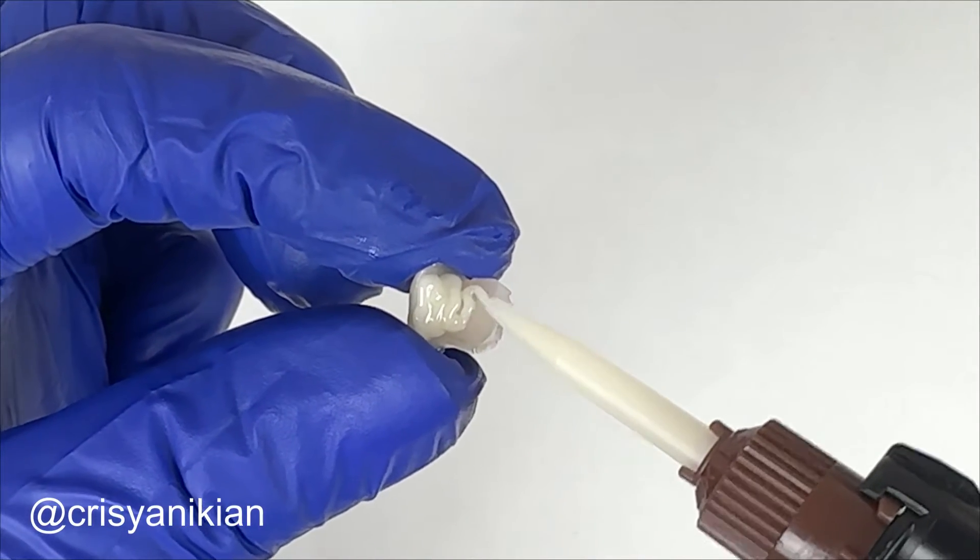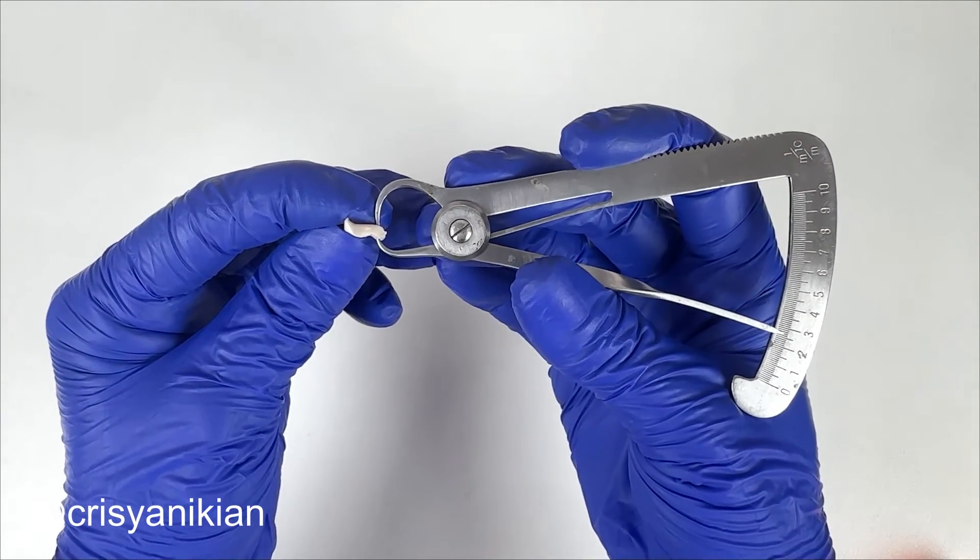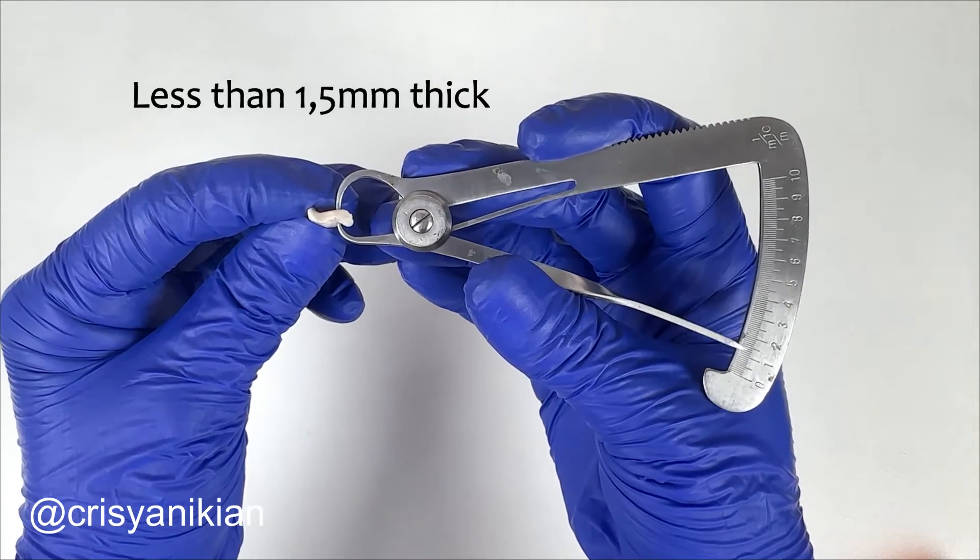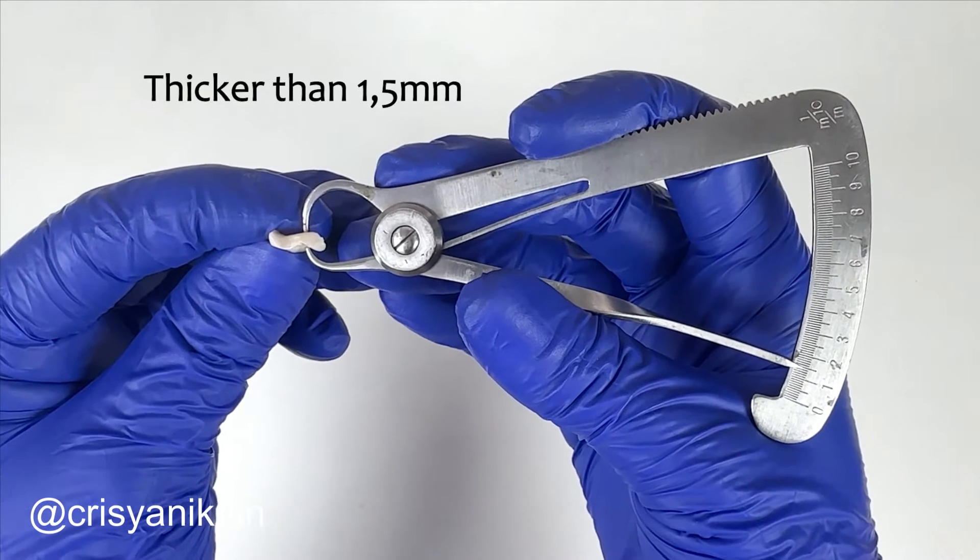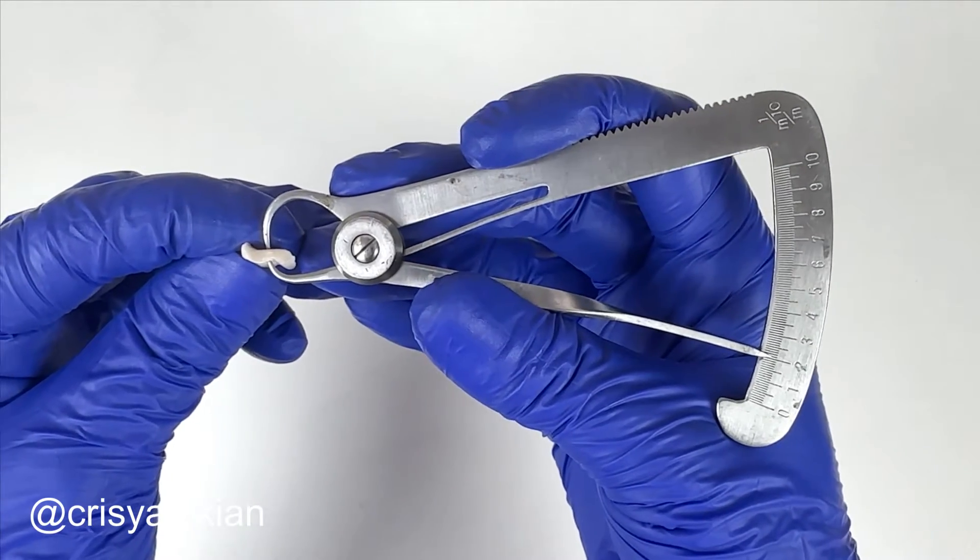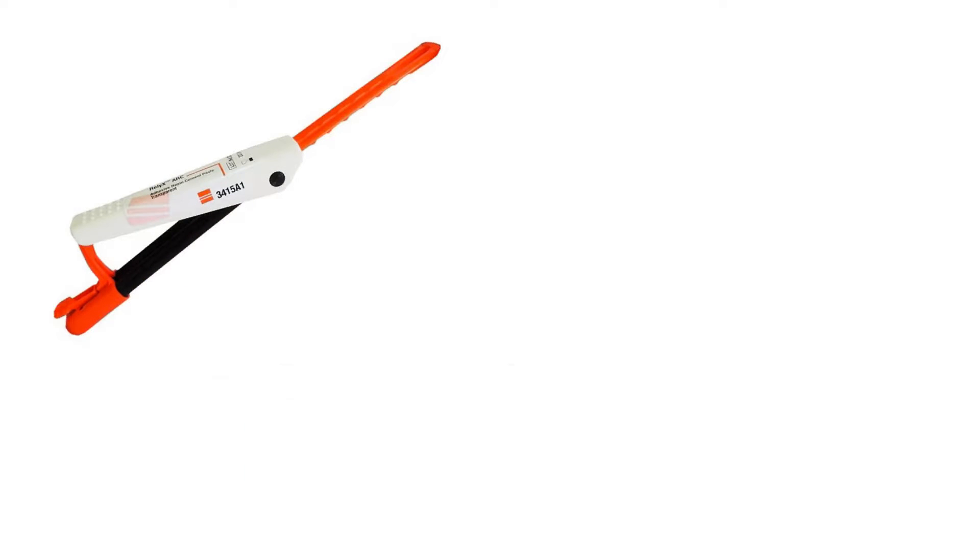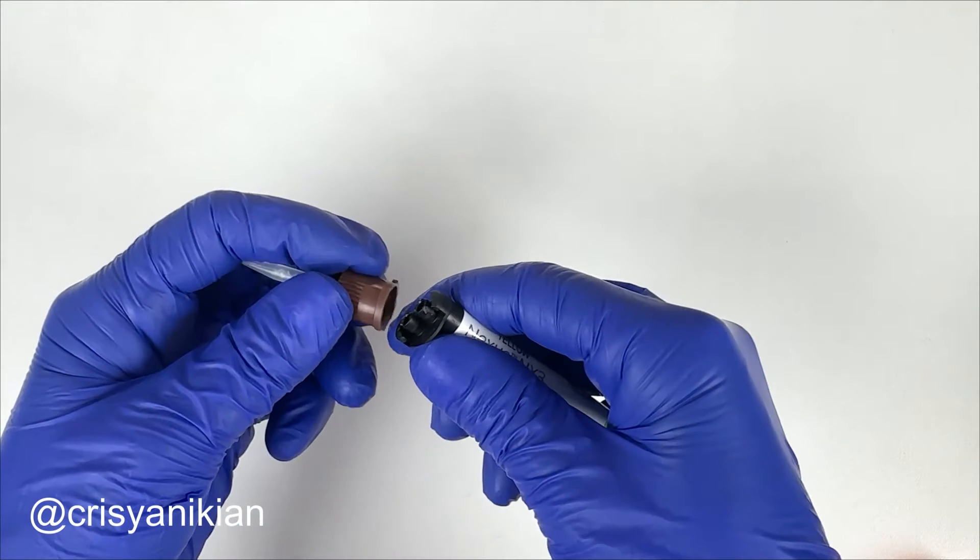Before cementing the onlay, select the resin cement you will use. Take into consideration the thickness of the onlay measured with a thickness gauge. If the onlay is less than 1.5 millimeters thick, you may choose a light cure resin cement such as light cured adhesive resin cement, low viscosity composite, or heated conventional composite. If the onlay is thicker than 1.5 millimeters, it will not allow proper light passage from the light curing unit, so opt for dual cure resin cements. In this case, the onlay has more than 1.5 millimeters thick, so a dual cure resin adhesive cement was used.